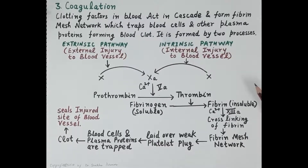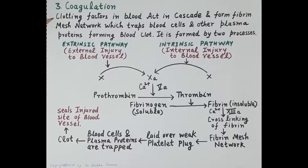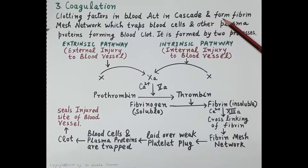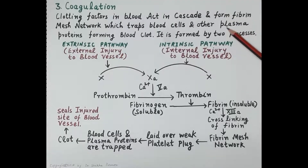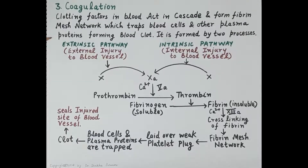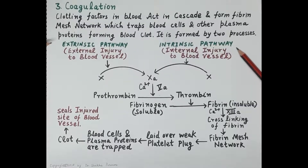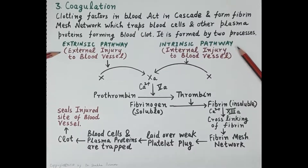Now let's discuss the process of coagulation in detail. There are 13 clotting factors (clotting factor 6 is unknown). These clotting factors act in a cascade — in a series — and finally form a fibrin mesh network. Entrapped within this network are platelets, blood cells, and other plasma proteins, forming the blood clot. The blood clot is formed by two processes: the extrinsic pathway and the intrinsic pathway.